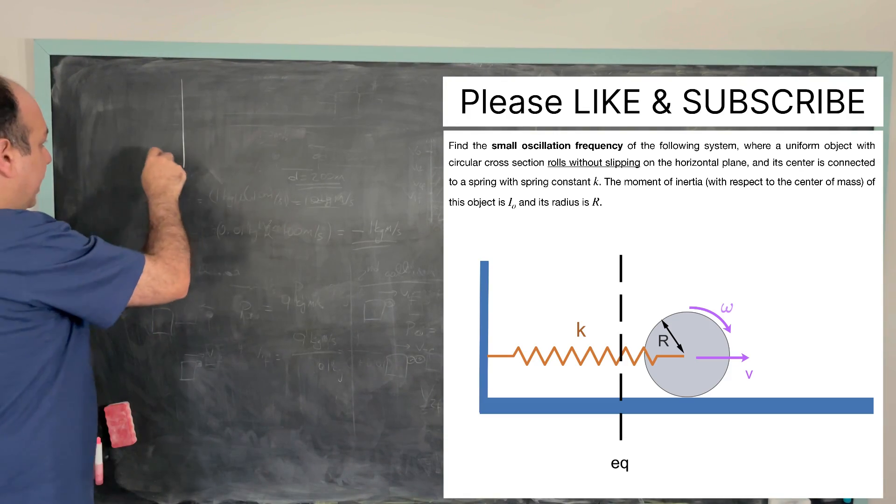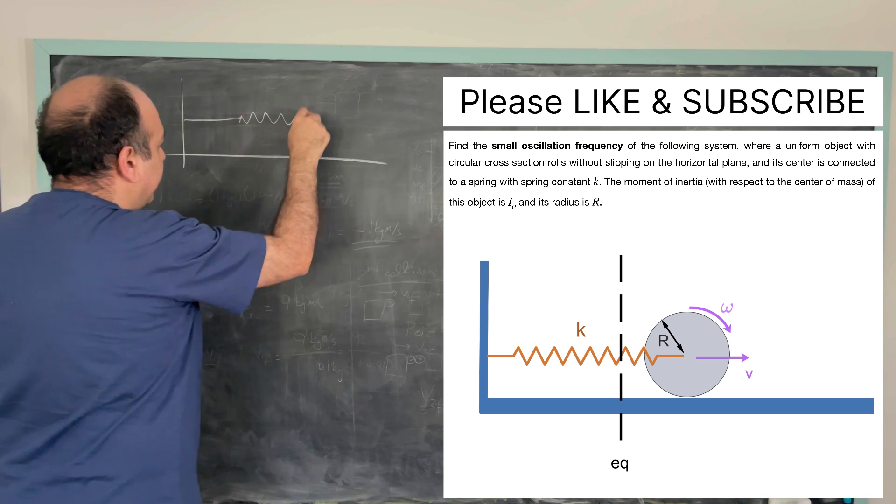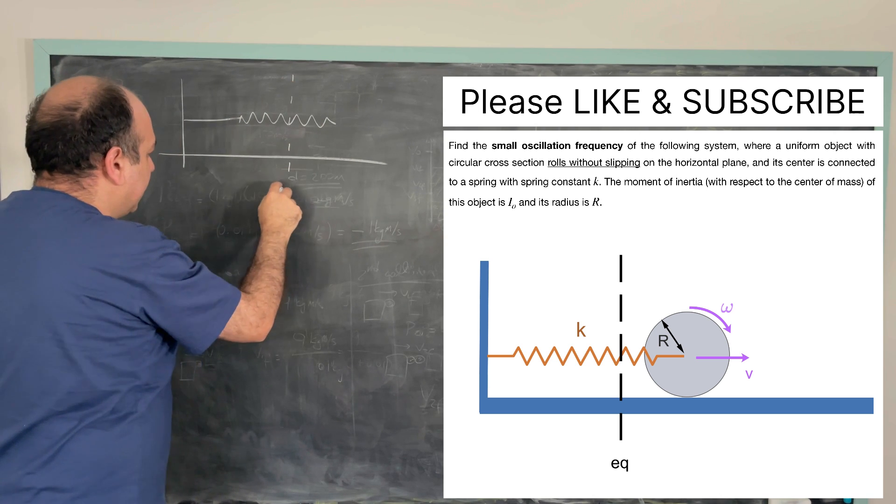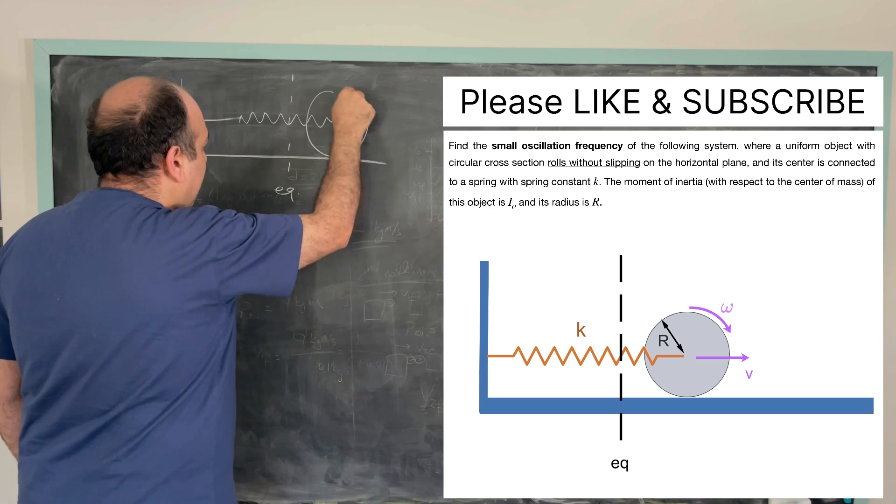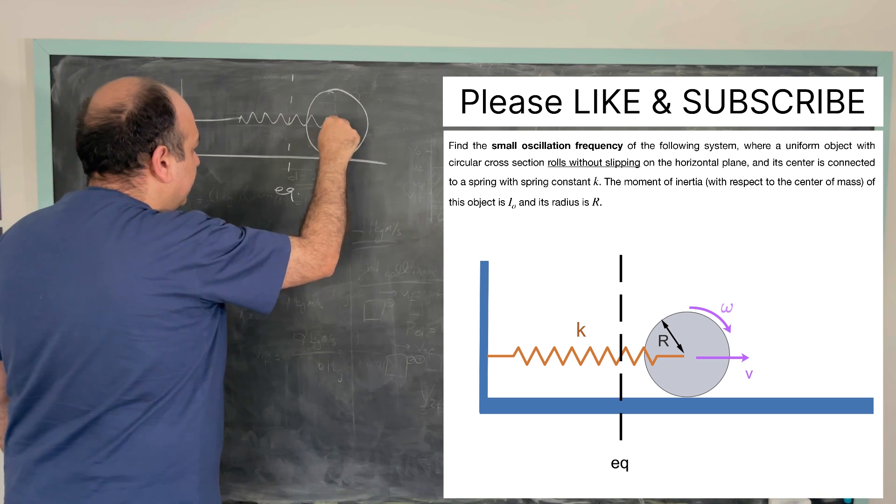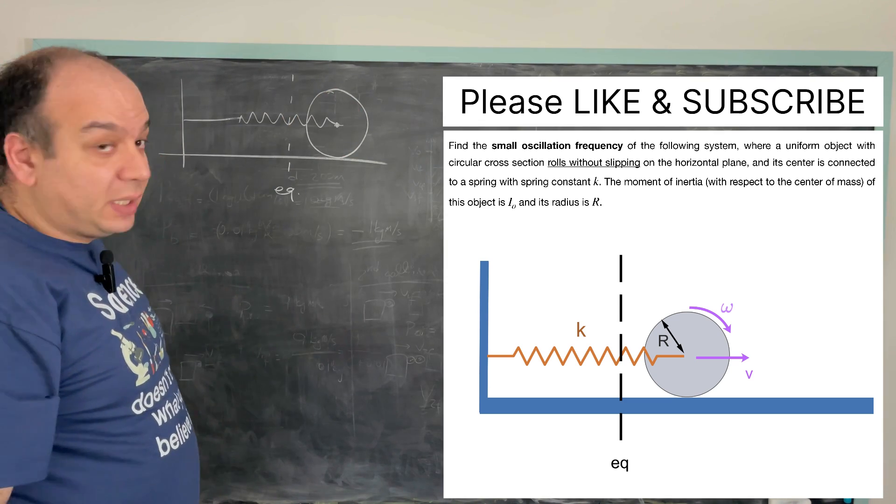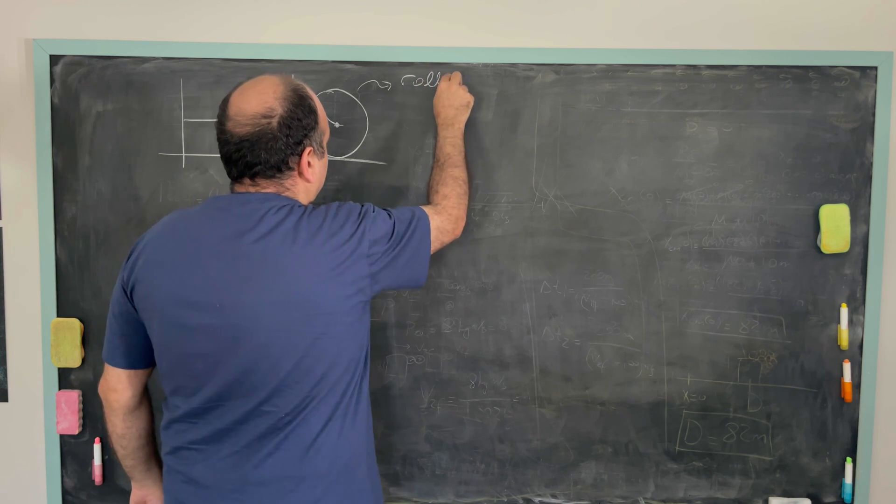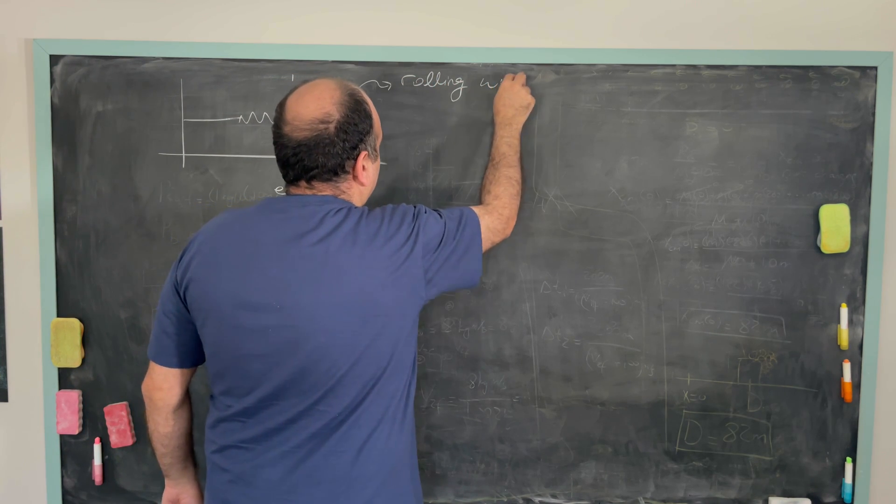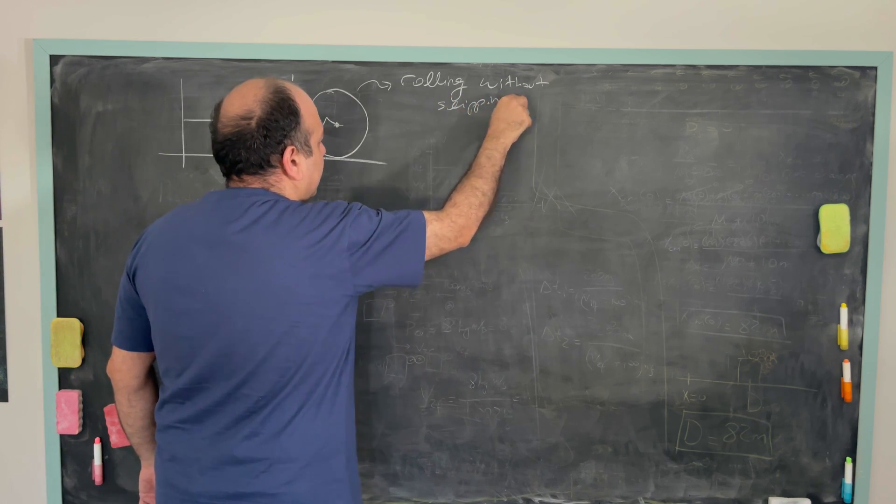So in our system we have an object. This is a spring. Let's suppose this is my equilibrium point. Spring is attached to an object right at its center. This object is rolling without slipping.